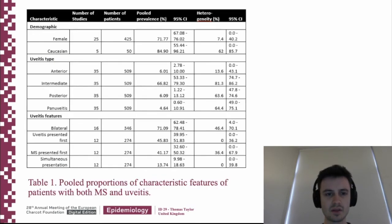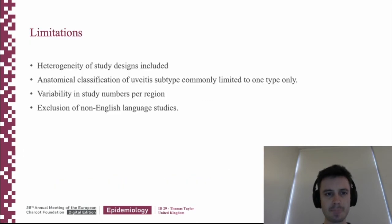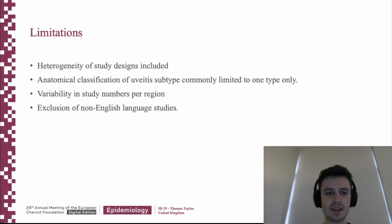The results of this pooled proportion study can be seen here. This study has limitations. These include the heterogeneity of the study designs included, the anatomical classification of uveitis being limited to often one type only, variability in study numbers per region, and the exclusion of non-English language studies.